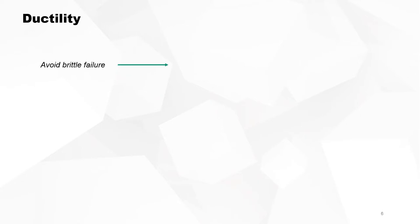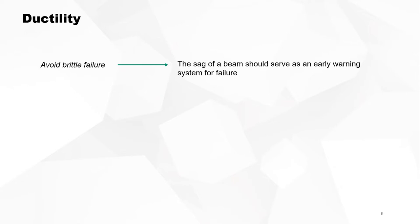Avoid brittle failure. The sag of a beam should always serve as an early warning system for failure. If the steel is not yielding, then the compression force in the concrete can be exceeded before the steel yields, and when this happens you have a sudden collapse of the beam, which you want to avoid at all times.